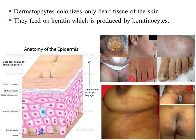Dermatophytes colonize only dead tissue of the skin. They will colonize the outermost portion of the skin because the stratum basal layer is living. The outermost superficial layers — the stratum corneum and the stratum lucidum — are dead, so that is where you will find dermatophytes. These dermatophytes will also feed on keratin, which is produced by the keratinocytes.